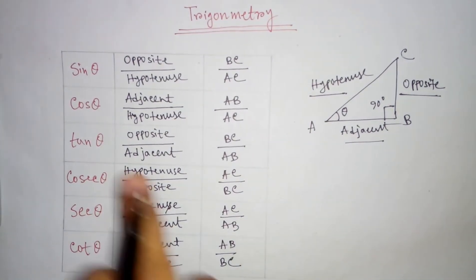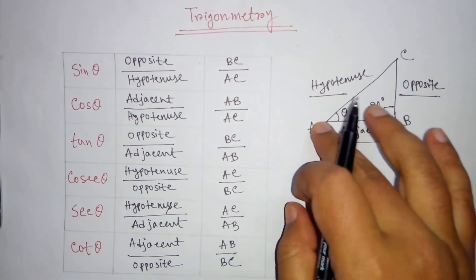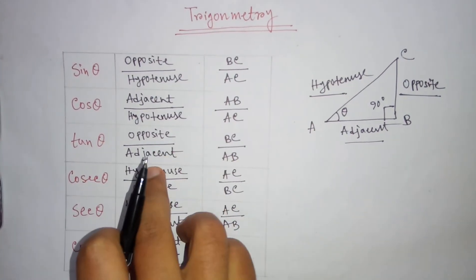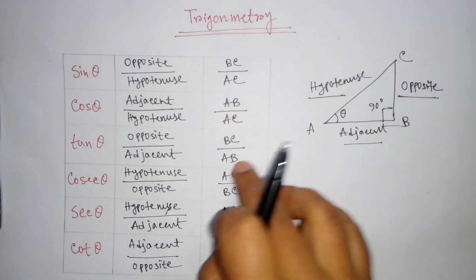What is cos theta? Cos theta is adjacent divided by hypotenuse, that means AB divided by AC. And tan theta is opposite divided by adjacent, that means BC divided by AB.